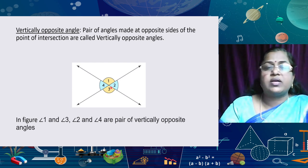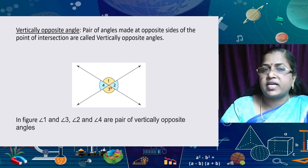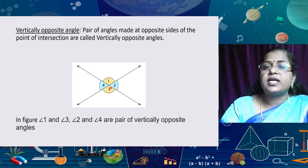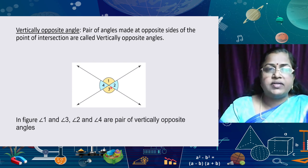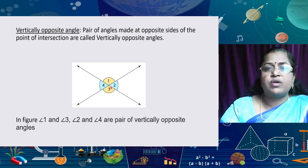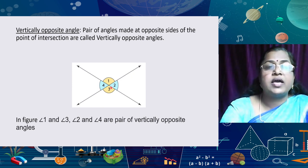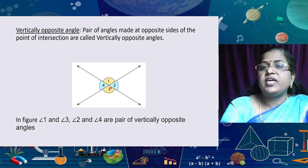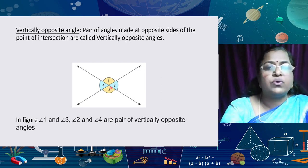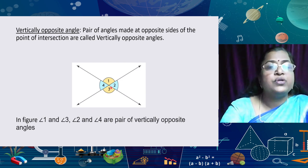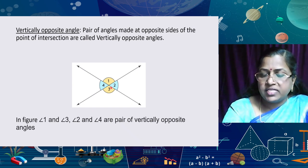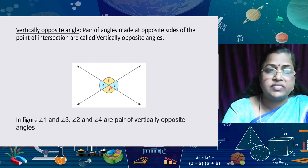Lines which pass through the same point are called concurrent lines. There are an infinite number of lines we can draw passing through a given point. But if we are given two points, we can draw only exactly one line passing through those two given points.